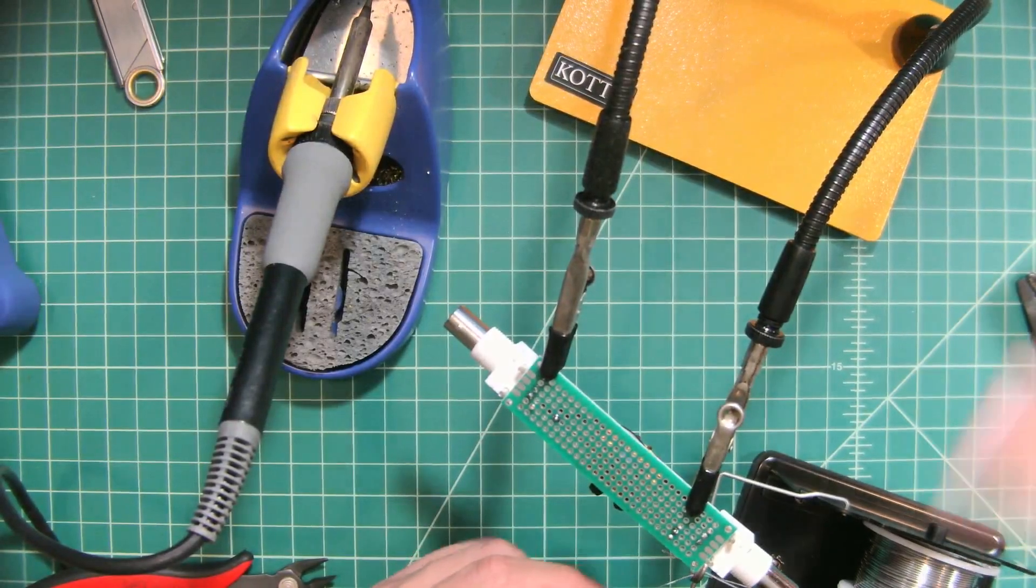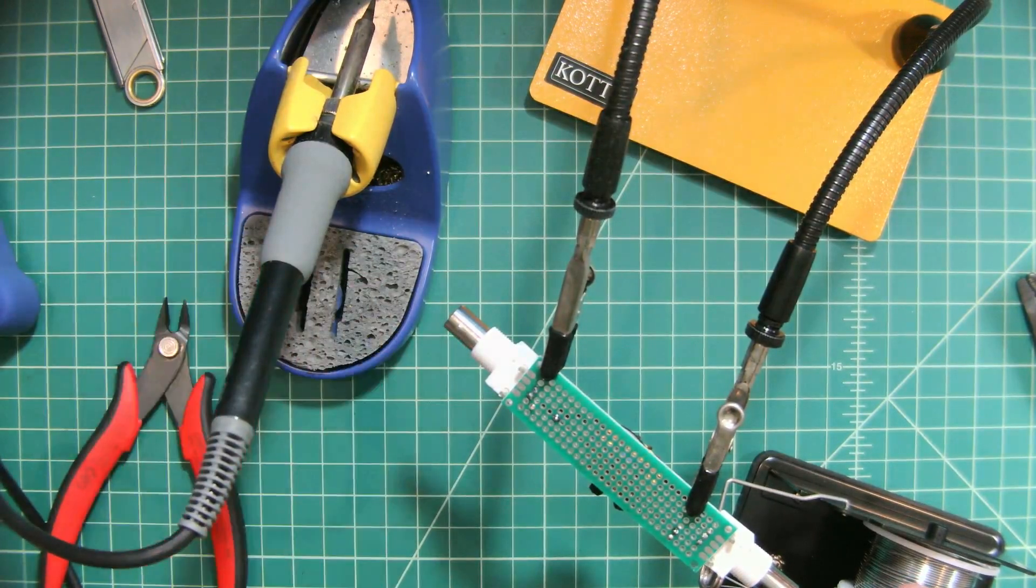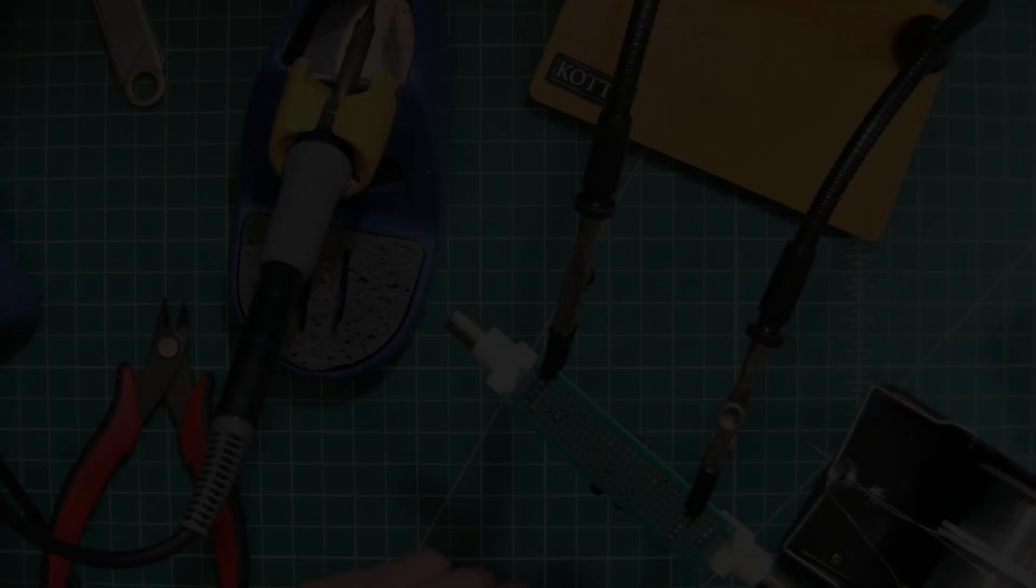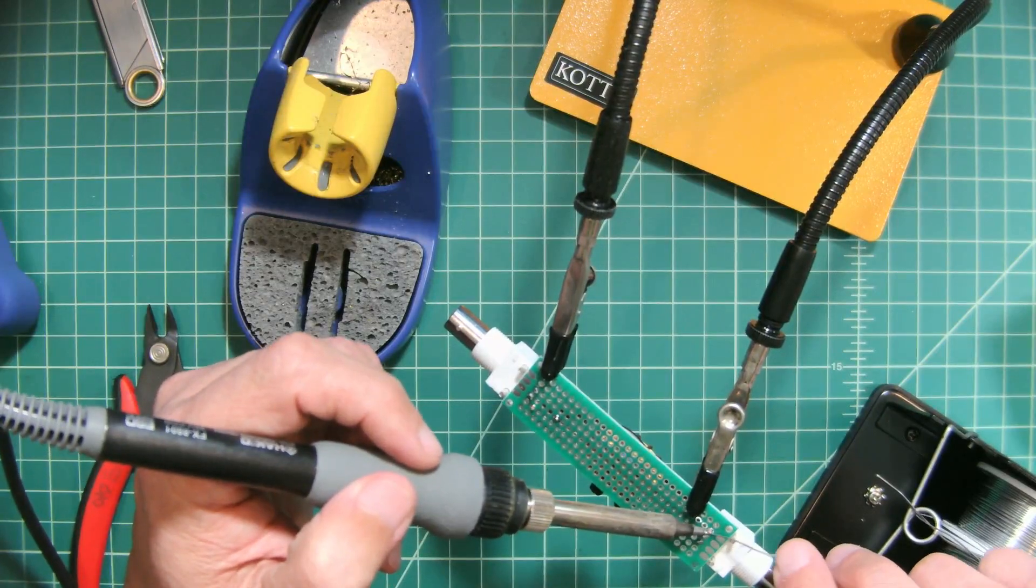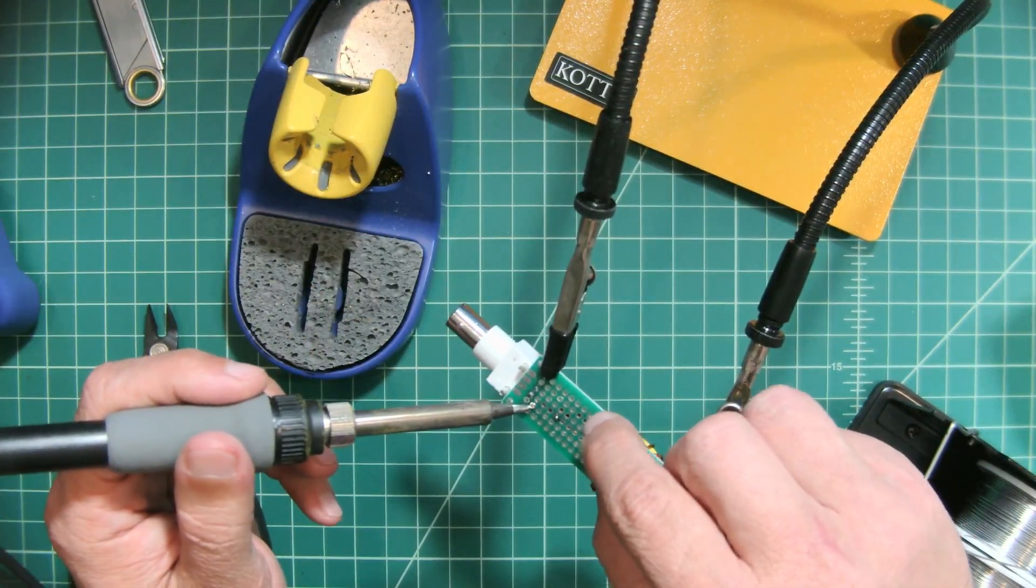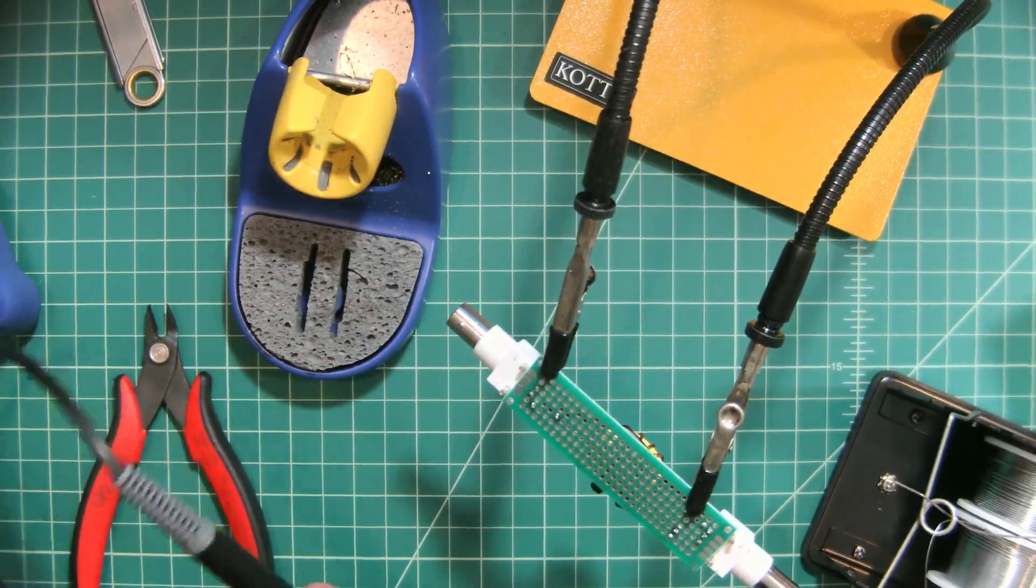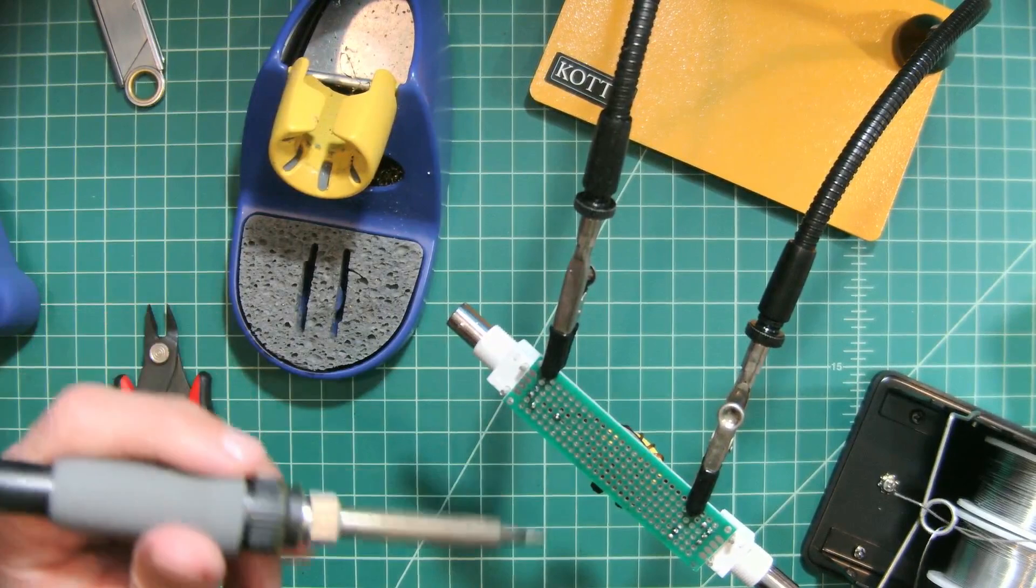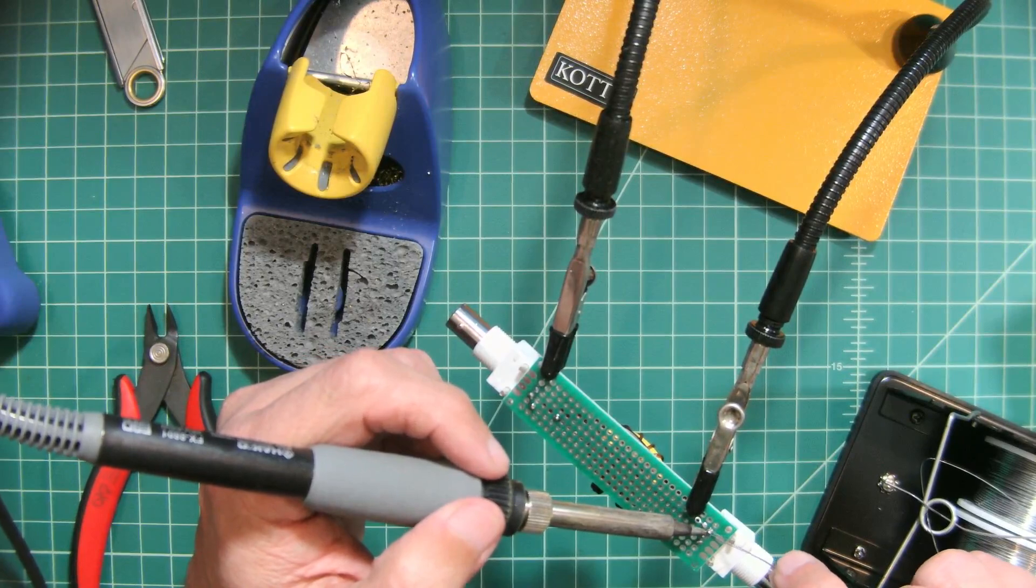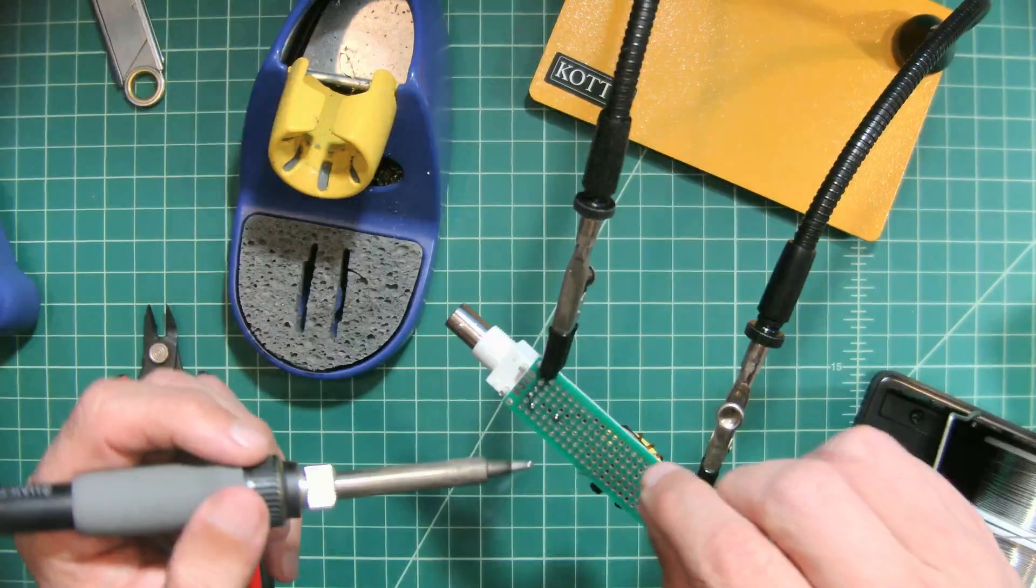All right, don't ask me why we've never used this particular device before, but we just haven't. But we're using it now, so that makes up for it. Let me go ahead and turn the soldering iron on that somehow got turned off. All right, now what I think I should do is I really think I should just bridge these using solder. Let's see how difficult that's going to be. And that is messy.